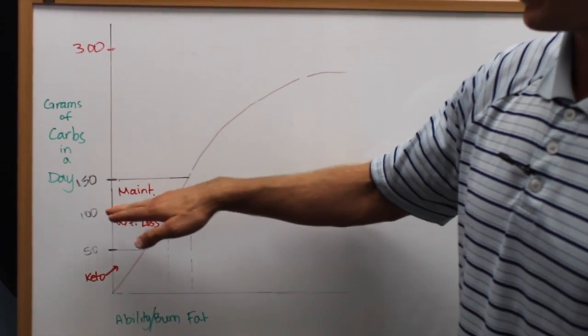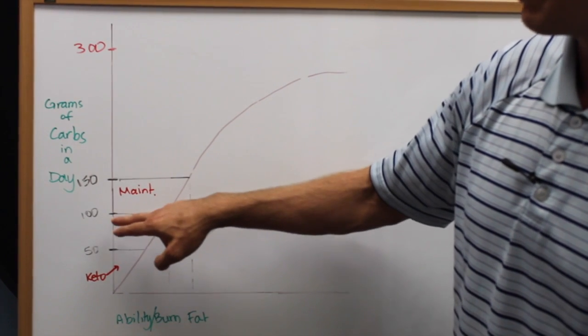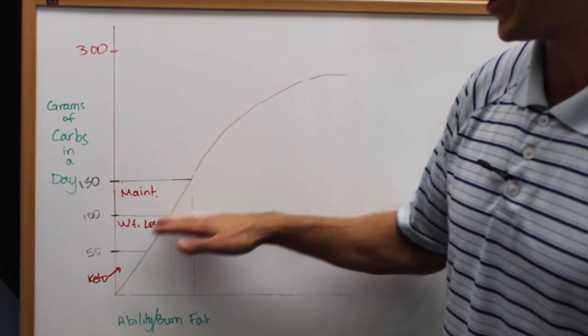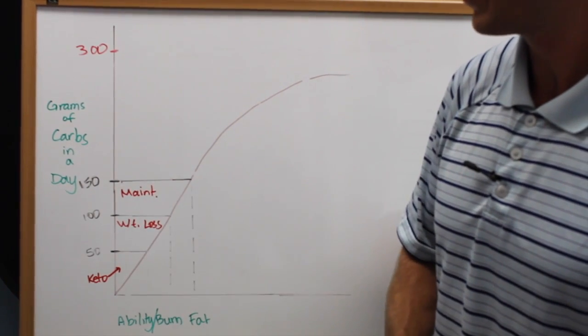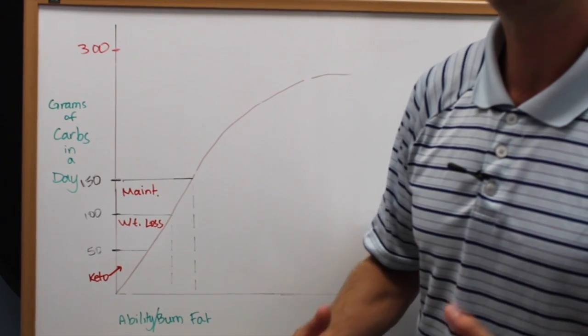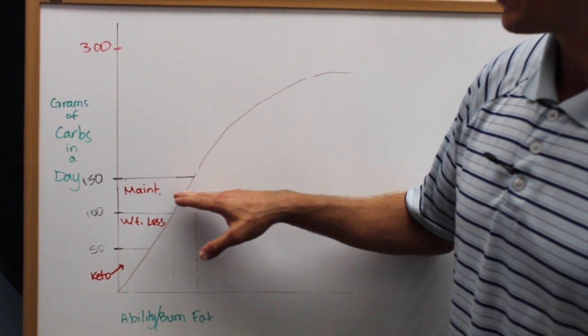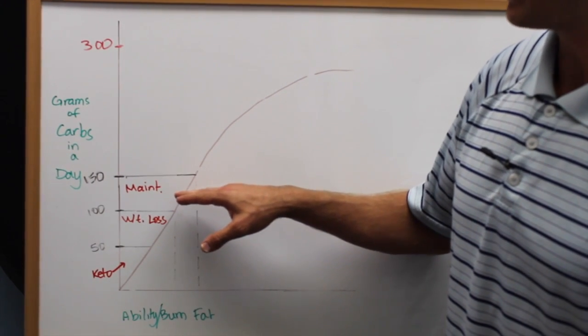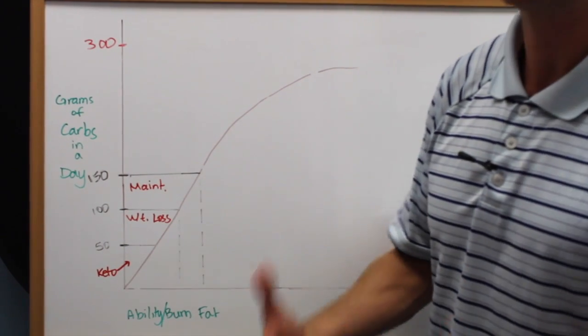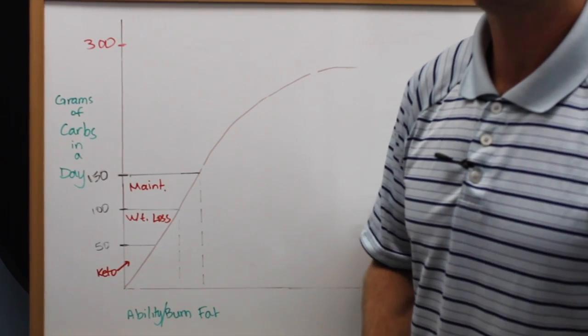Again, based on your genetic ability and lifestyle will dictate these numbers a little bit more specifically. But between 100 and 150 grams of carbohydrates a day, we stay in the maintenance zone. And we call this the maintenance zone, not because you're sustaining the same weight, but because you're sustaining what we call a healthy weight or the weight that is right for you. If you're the kind of person that looks like a supermodel in the maintenance phase, then that's something that's healthy for you. If you don't look like a supermodel, but you're in the maintenance phase, well, that's just right for you. And that's where health lies.